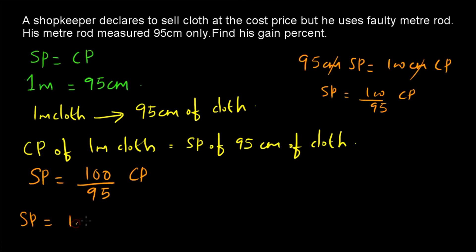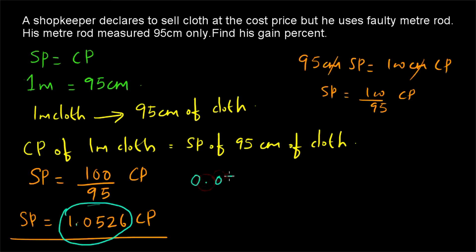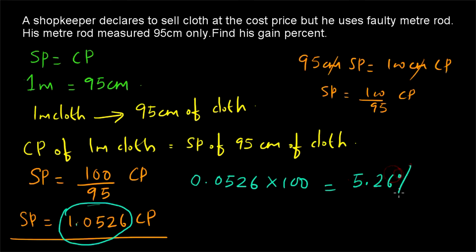SP = (100/95) × CP gives us approximately 1.0526 × CP. Once we get this formula we can easily find out whether it is a gain or loss. Since 1.0526 is greater than 1, it represents a gain. The gain percentage is the decimal part after 1, which is 0.0526, multiplied by 100 — giving us 5.26% gain. For example, if it were 1.25, the gain would be 25%; if 1.5, the gain would be 50%.